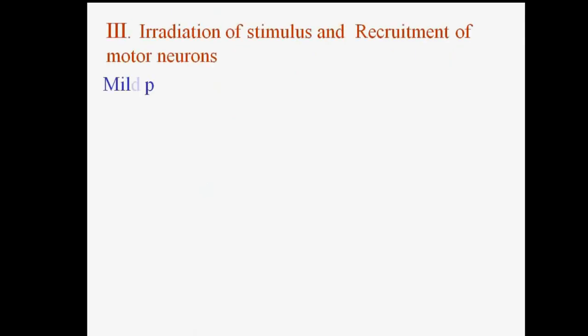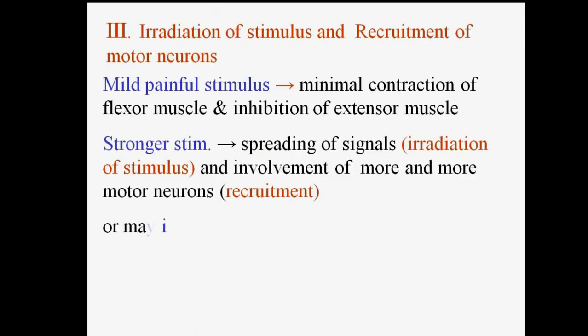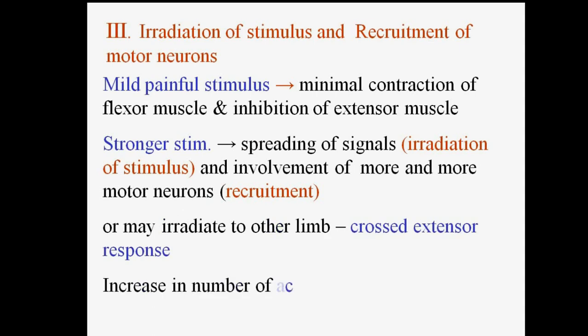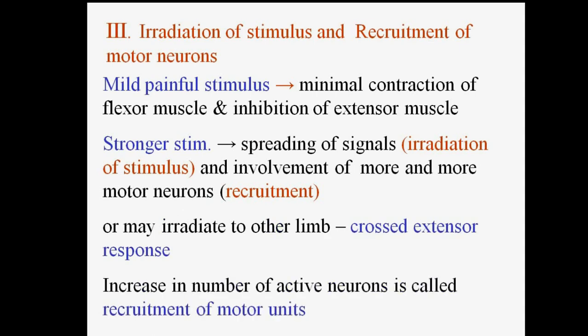In the knee jerk reflex, reflex time is 12 to 19 milliseconds and center delay is 0.6 to 0.7 milliseconds, because it is monosynaptic. For irradiation of stimulus and recruitment of motor neurons: a minimal stimulus causes minimal contraction of flexor muscle and inhibition of extensor muscles.